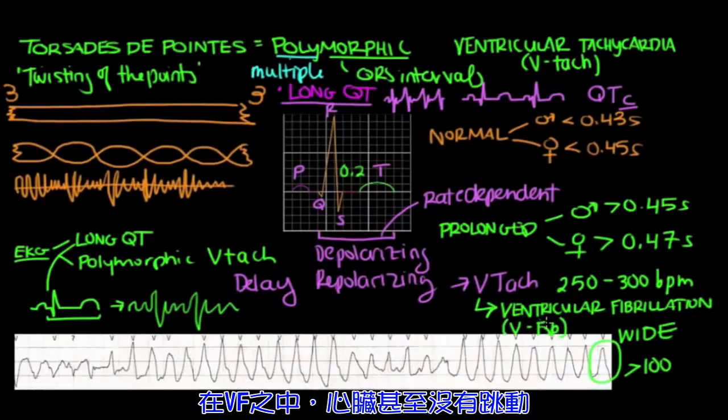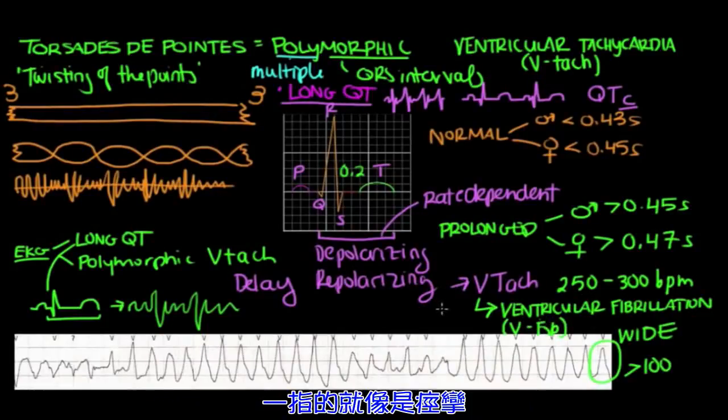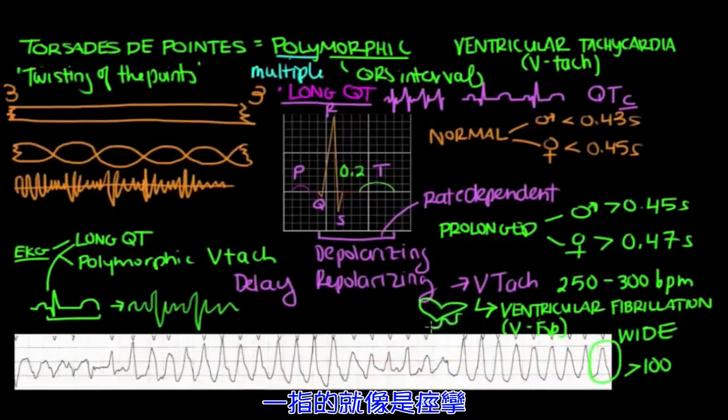And in V-fib, the heart doesn't even beat. Instead, the walls are spasming, and blood can't circulate through the rest of the body.